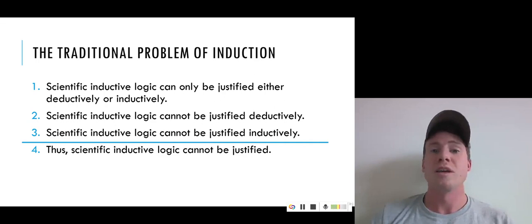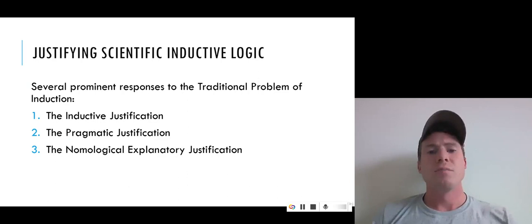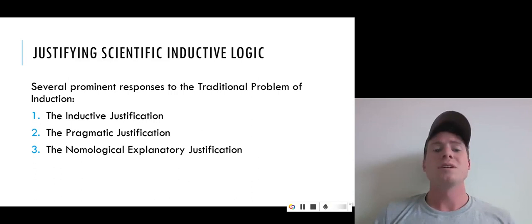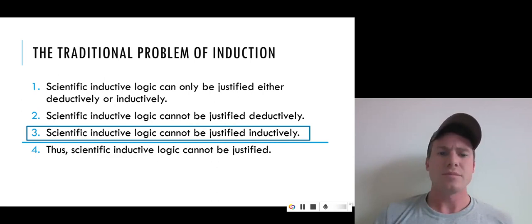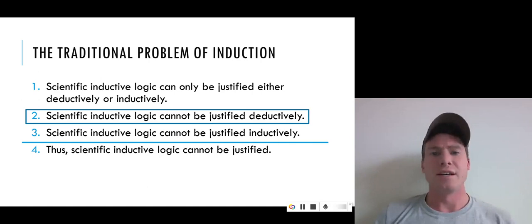In Monday's video, we looked a little more closely at Hume's reasons for believing premise two and premise three. We then started to look last Monday at some proposed responses to the traditional problem of induction. In particular, we looked at attempts to justify induction inductively — that is, to challenge that third premise of Hume's argument, that we can't justify inductive logic inductively. What we want to look at now are two attempts to justify scientific inductive logic that attempt to do so deductively.